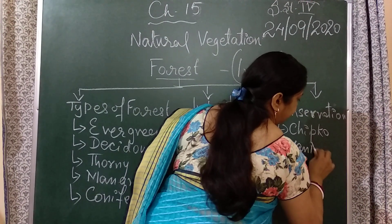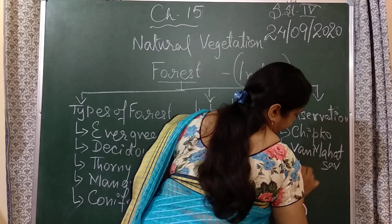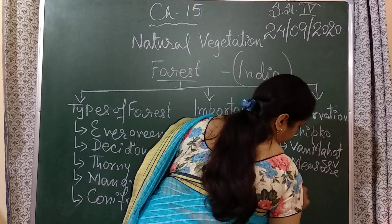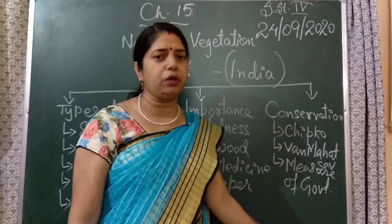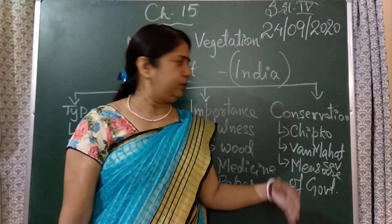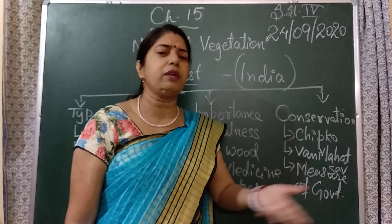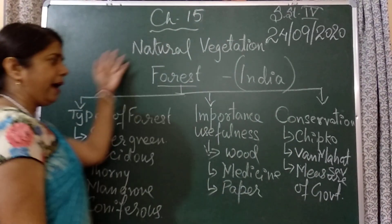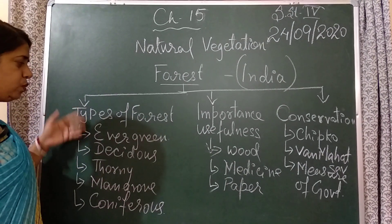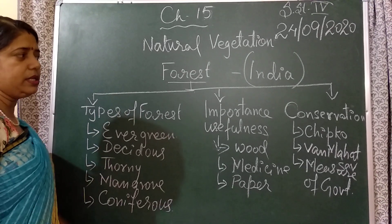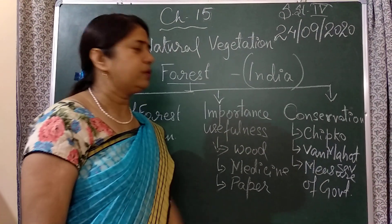Another topic covers the measures undertaken by the government to protect forests. Not only the government — we also need to work on conservation. Because if we can't do something, we should at least not cause harm. We need to plant a tree; if we have space, plant a tree, herbs, shrubs, whatever we can around us. So this is our overview of this chapter — what topics we are going to study. Let us go through the text and see in detail what is Evergreen, what is Deciduous, Thorny, Mangrove, Coniferous forest, the usefulness of forests, and how we can conserve our forests.